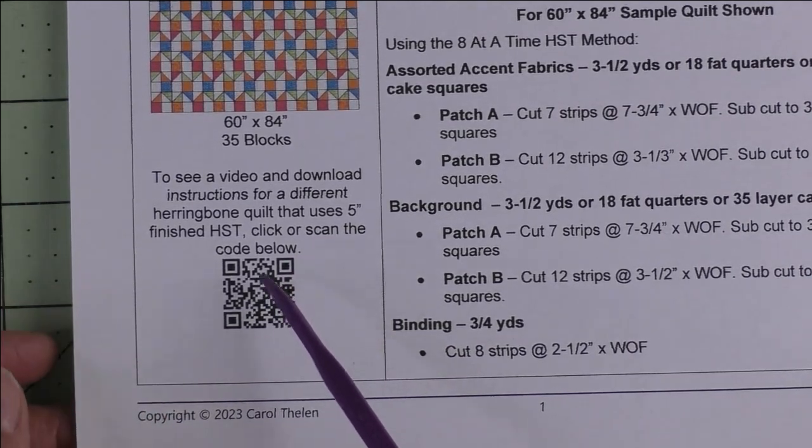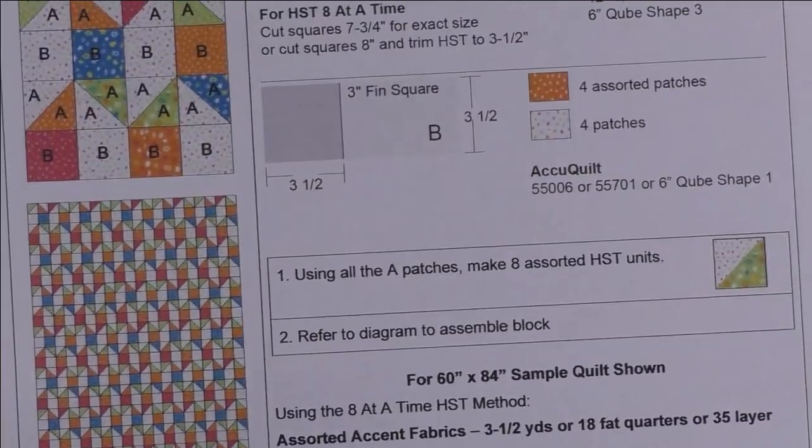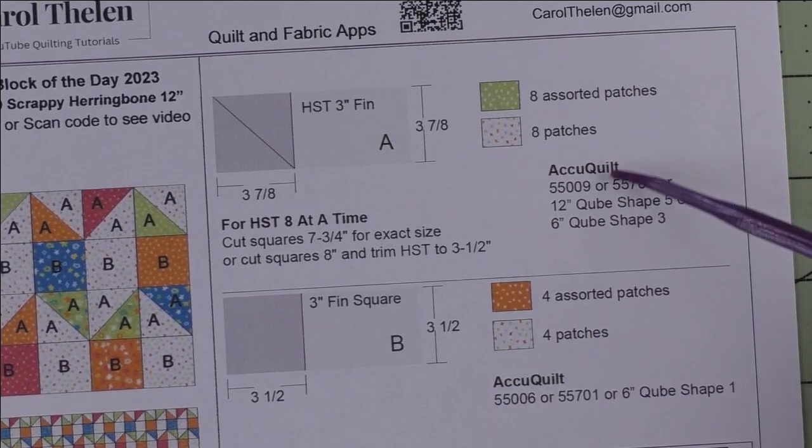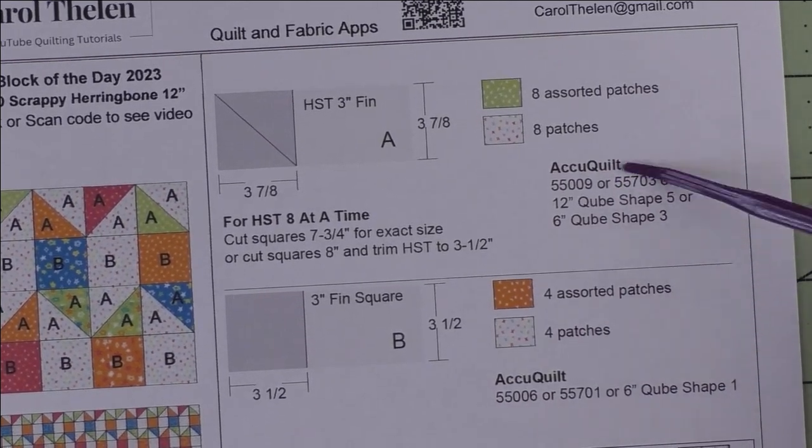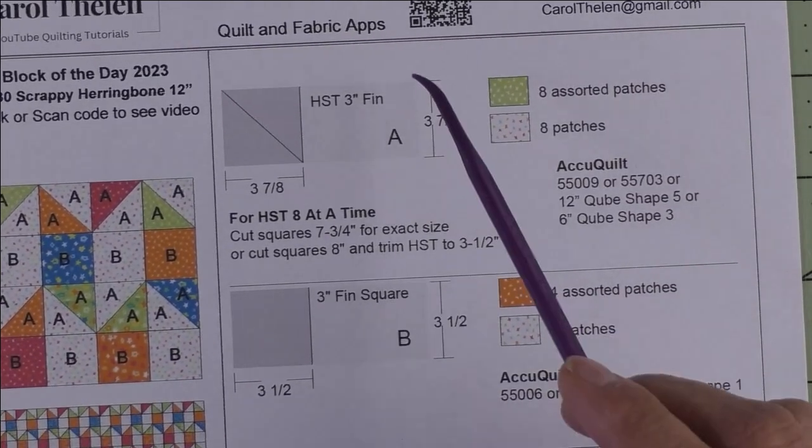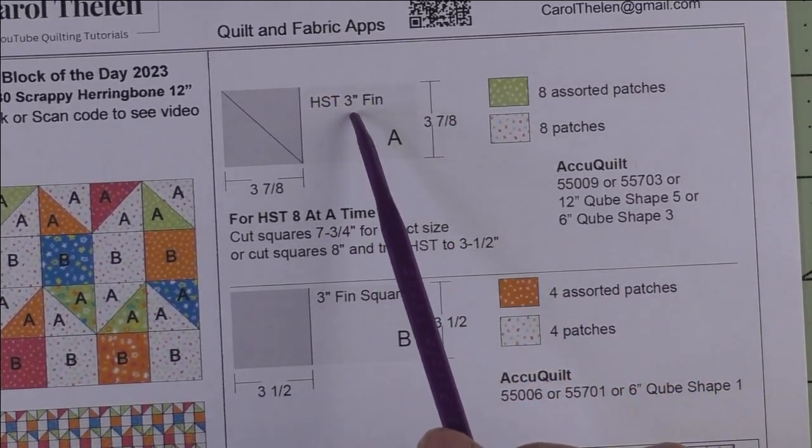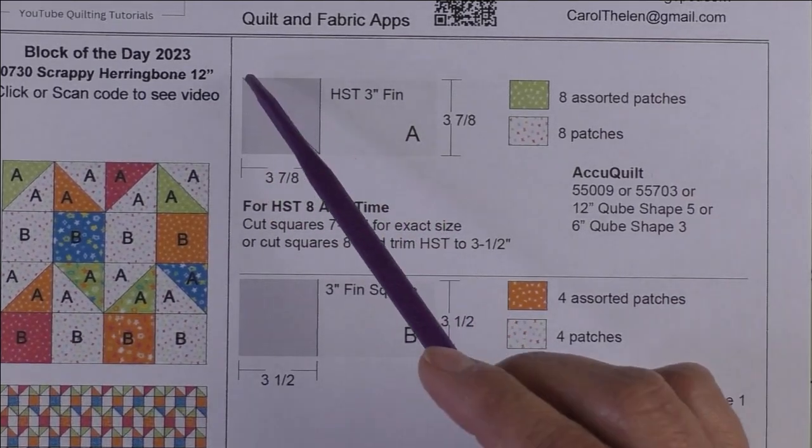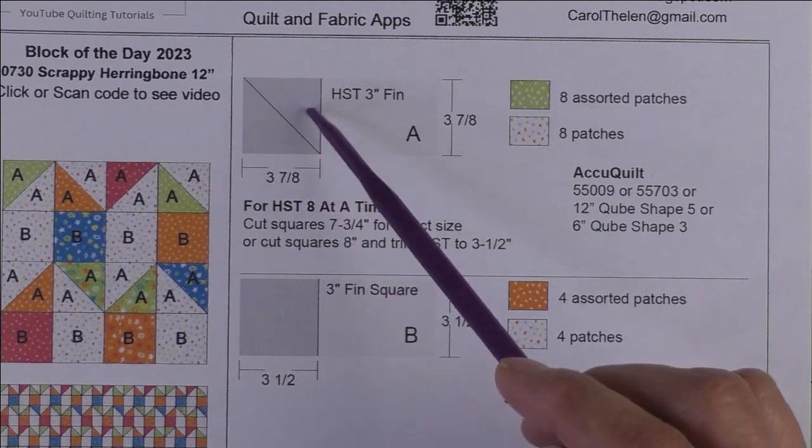There are only two patches and if you like to make patches with the AccuQuilt, here are the dies that will make both of these patches. Patch A is a three inch finished half square triangle. We cut three and seven eighth inch squares and cut them in half once on the diagonal for two patches.